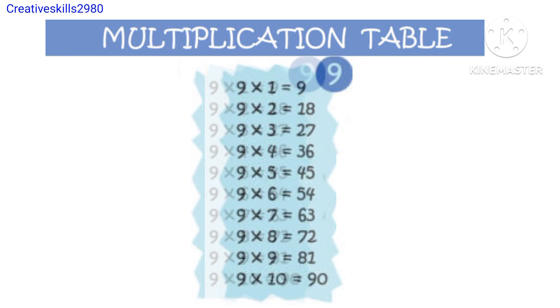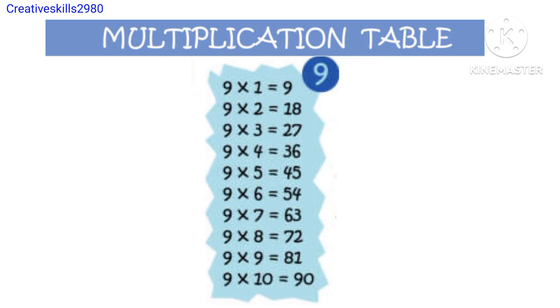9 1s are 9, 9 2s are 18, 9 3s are 27, 9 4s are 36, 9 5s are 45, 9 6s are 54, 9 7s are 63, 9 8s are 72, 9 9s are 81, 9 10s are 90.